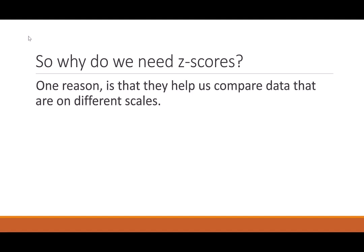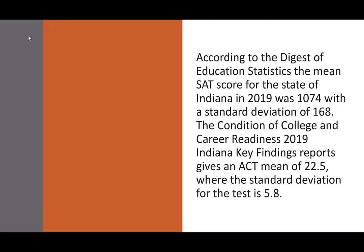So you might be thinking, why do we need these scores? And one reason is that they help us compare data that are on different scales. So for example, according to the Digest of Education Statistics, the mean SAT score for the state of Indiana in 2019 was 1,074 with a standard deviation of 168. The Condition of College and Career Readiness 2019 Indiana Key Findings Reports gives an ACT mean of 22.5, where the standard deviation is 5.8. So you can see we have these two different tests, SAT, ACT, that score completely differently. So how can we tell how good a student did if we had two different tests being taken?